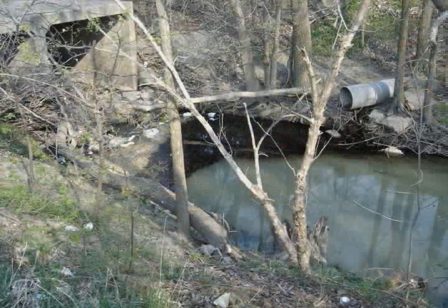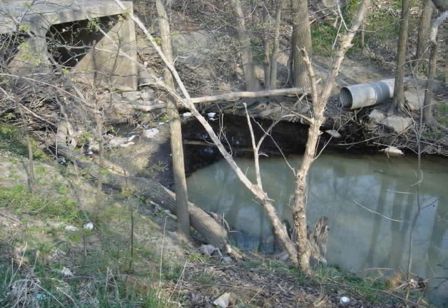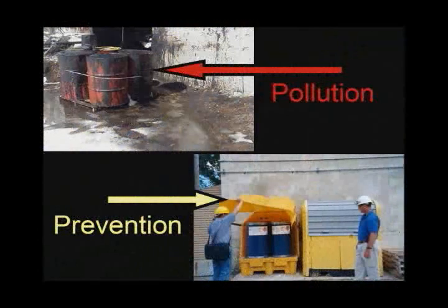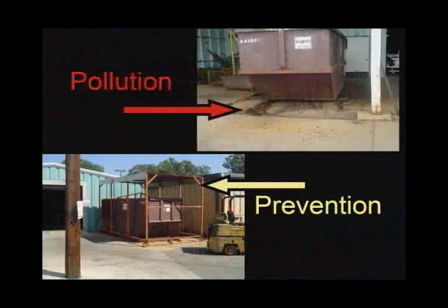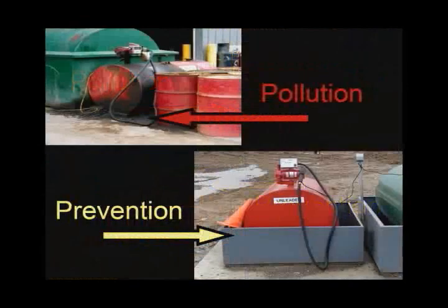This potentially contaminated stormwater may then flow over the ground and enter our lakes, rivers, streams, and wetlands. The best way to combat this is through pollution prevention. It is better for the environment and more cost effective to prevent the contamination of stormwater at the source. This concept has led to the development of the current stormwater regulations.